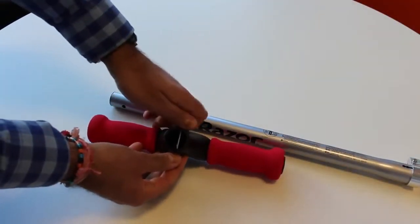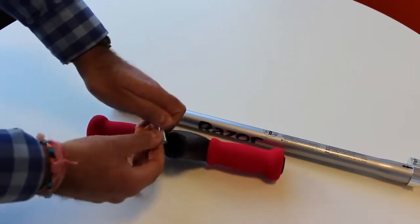The first thing to do is actually assemble the handlebar so you want to remove that bolt.